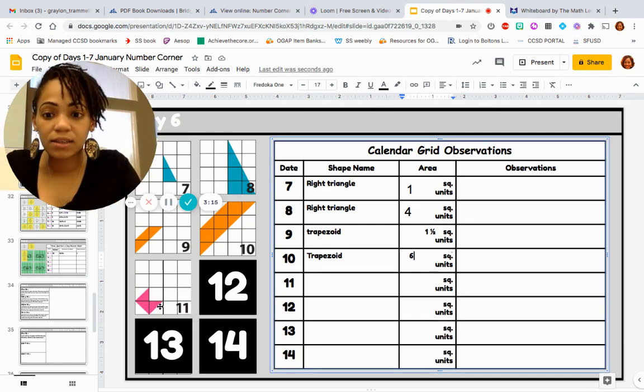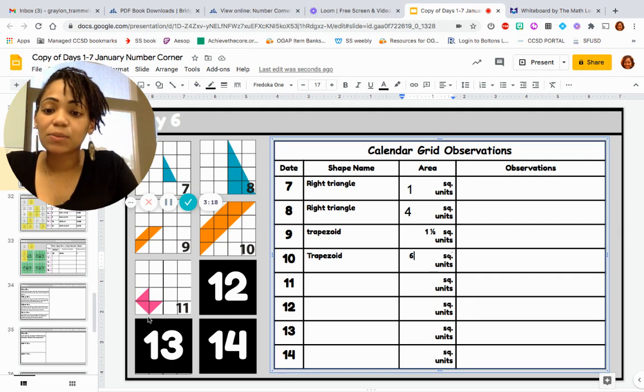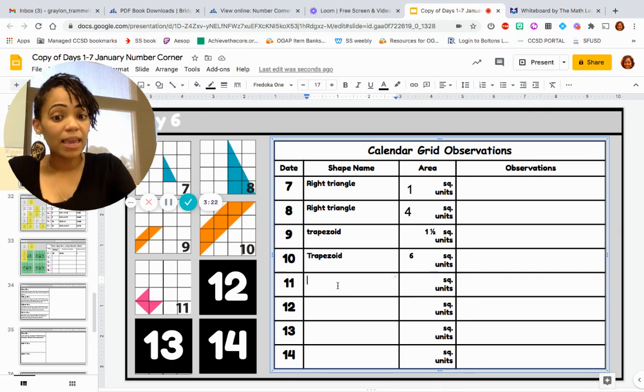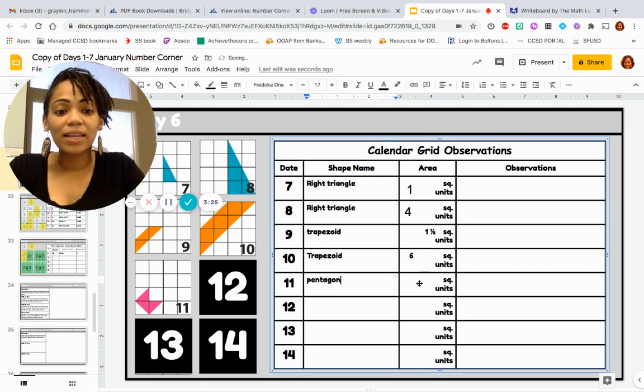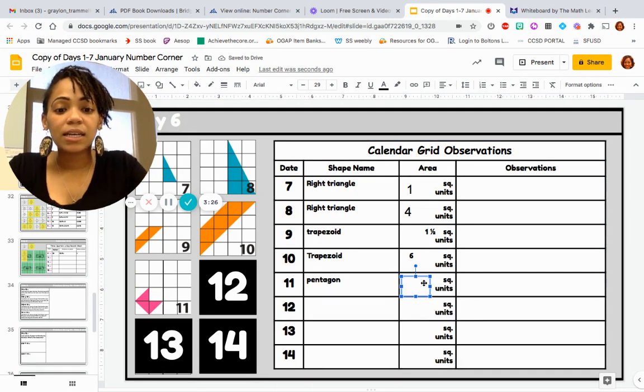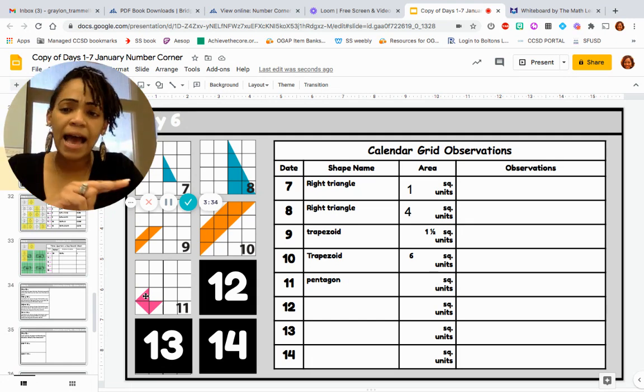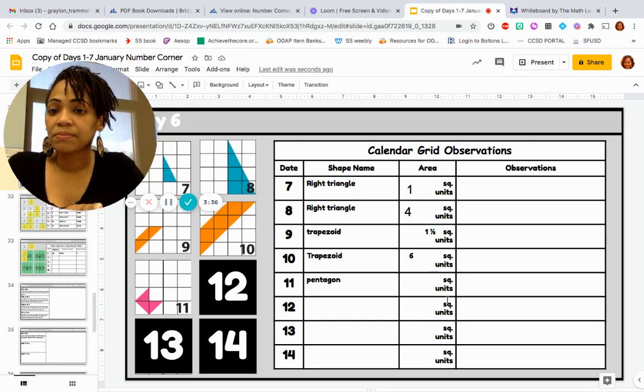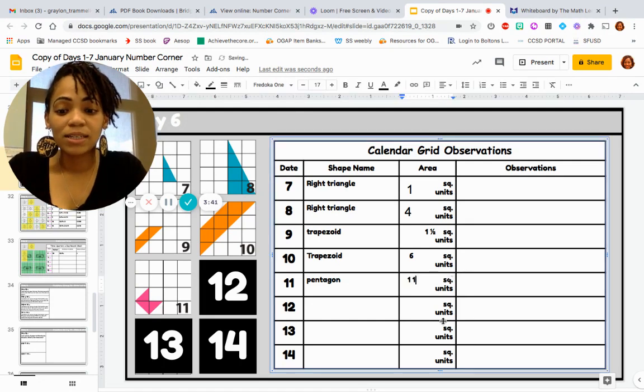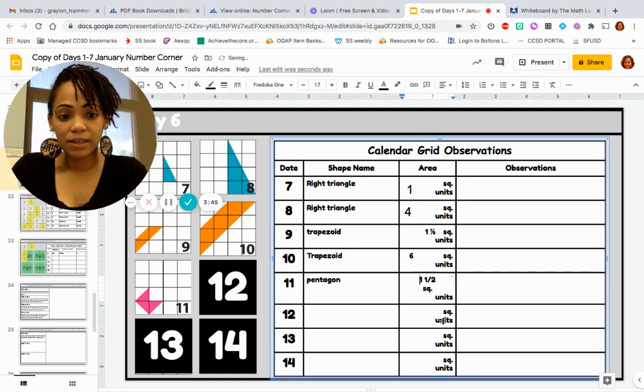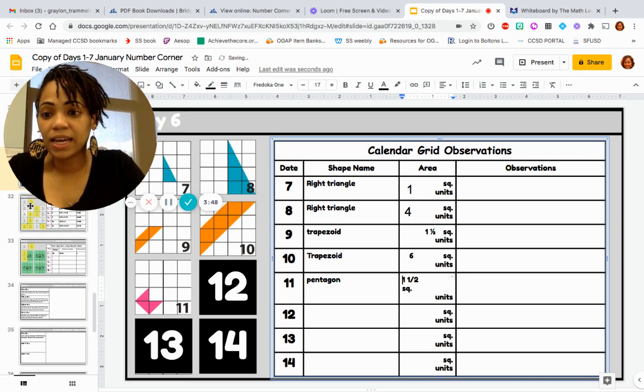Let's look at today's. What is this shape? Let's see how many sides it has. One, two, three, four, five sides, which means it should be a pentagon, right? It is a pentagon. Let's figure out our area. Half, half, half. A half plus a half plus a half give us three halves, or I could say one and a half square units. Perfect. So that's our calendar grid for today.